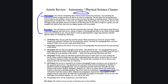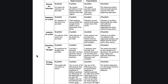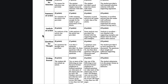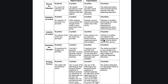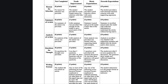Finally, let's take a quick look at the rubric used to grade this. I'm looking at all of these sections: the reason for selection, the summary of the article, the analysis, your questions for thought, and your writing format. You can receive 10 points for full credit on each. If something is pretty good but missing some things, you'll get 6 points for that section. If it really needs a lot more work, that would be 3 points, and if you don't include a section at all, you would get zero.